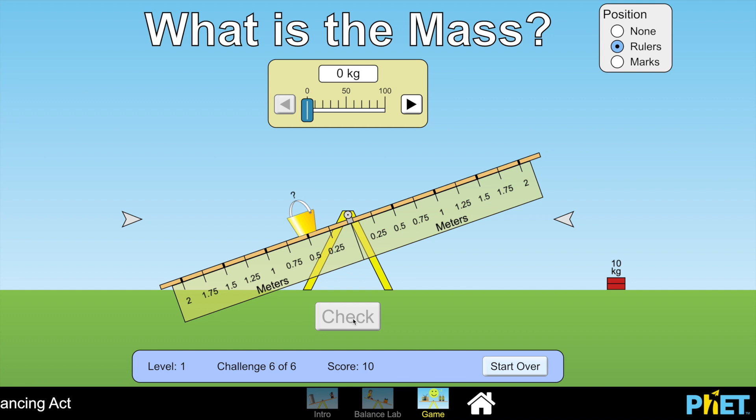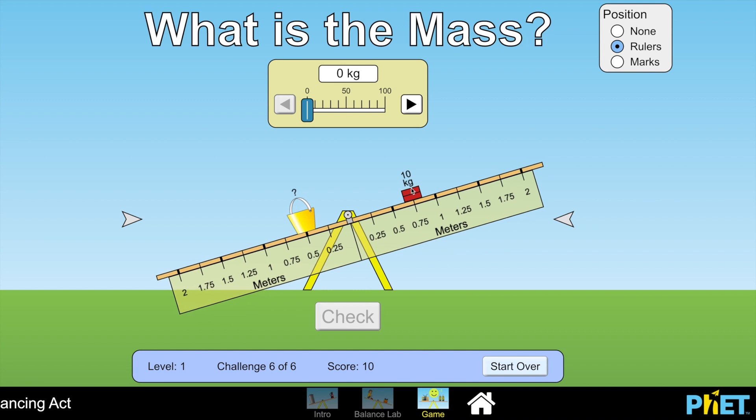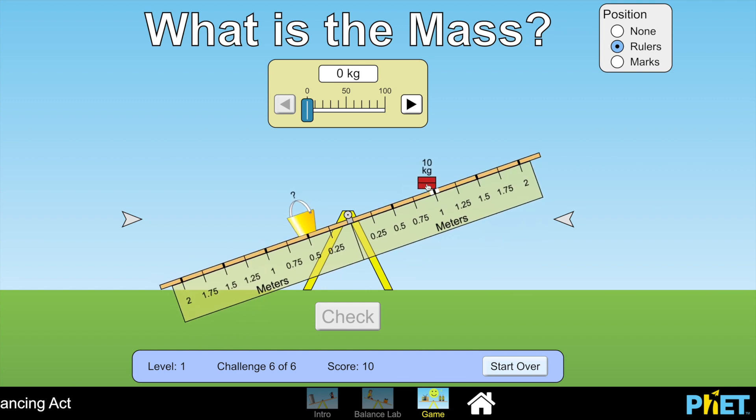Let's try this final example. What is the mass of this bucket? I'm going to place the mass at different distances from the pivot. Pause the video when you've figured it out.